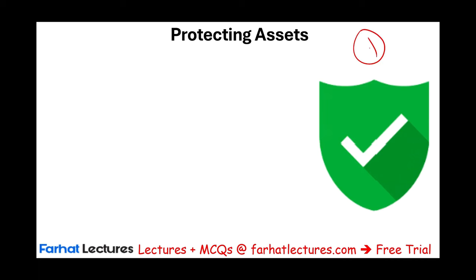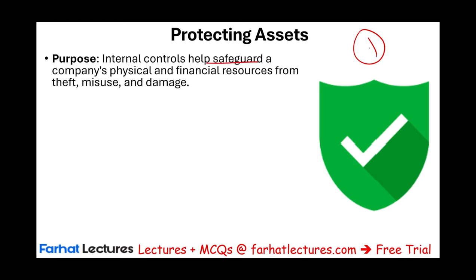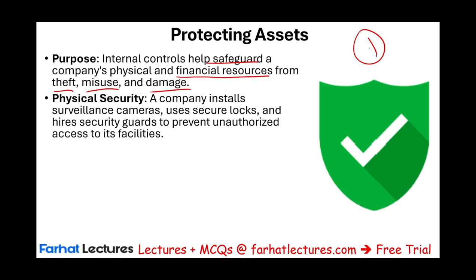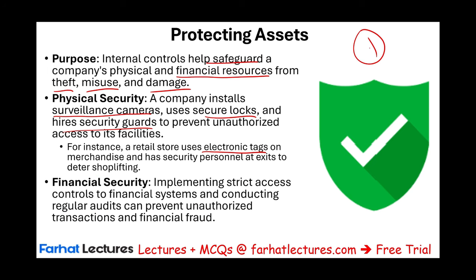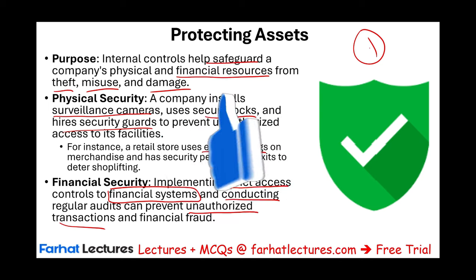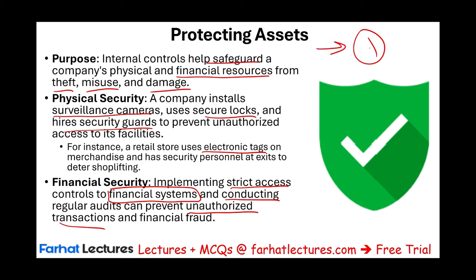Objective one of four: protecting the asset. It's basically physically safeguarding the company's assets and financial resources from theft, misuse, and damage. You have fences, locks, security cameras. A company would install security surveillance cameras, secure locks, hire security guards, and other things to prevent unauthorized access to its facilities. For example, a retail store uses electronic tags on merchandise and has security personnel at exits to deter shoplifting. Financial security involves implementing strict access controls to the financial system, since through it you can make payments and transfer money. You want to conduct regular audits to prevent unauthorized transactions and financial fraud. This is one purpose of internal control: protecting the asset.